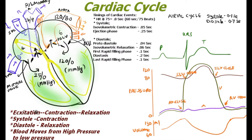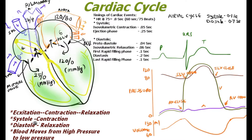The cardiac cycle is followed by the excitation of the conducting system. As the conducting system excites, initially the atria excite and contract. The excitation then moves down to the apex and up to the base of the ventricles, causing ventricular excitation and contraction.